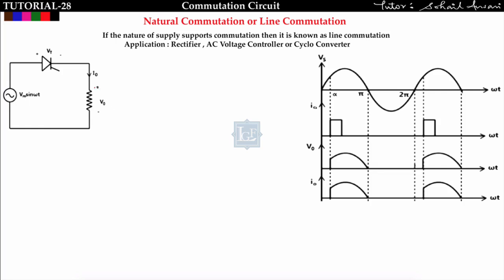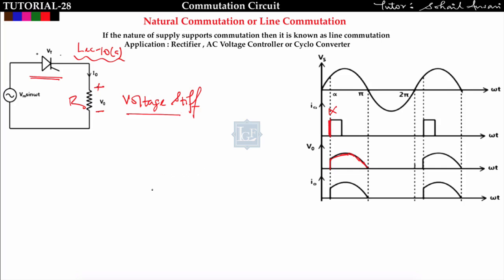We discussed this scenario in the previous lecture, lecture number 10A. When I turn on this thyristor — triggered at an angle alpha — it will be short-circuited and the output voltage will follow the supply voltage. Since resistive load R is connected here, the output voltage and output current both will be similar, because in a voltage-stiff type of load the output voltage waveform and output current waveform are similar. So I_0 = V_0 / R.